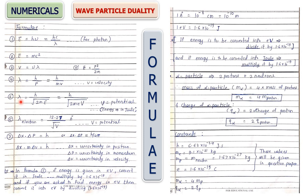If lambda of alpha particle is asked, you need to know its mass. If lambda of electron is asked, put mass of electron; if lambda of proton, put mass of proton — those values are typically given in the question paper. But if lambda of alpha particle is asked, its mass is not given directly. You must know that an alpha particle consists of two protons and two neutrons, so mass of alpha particle = 4 × mass of proton.